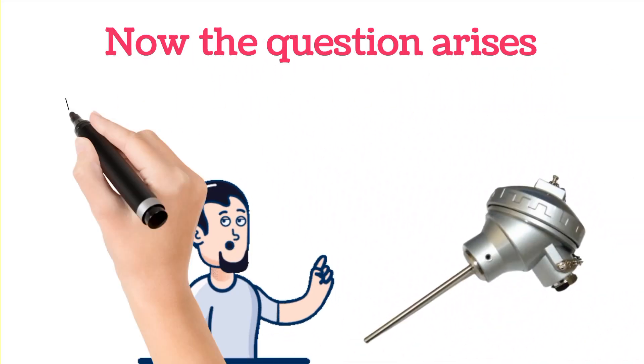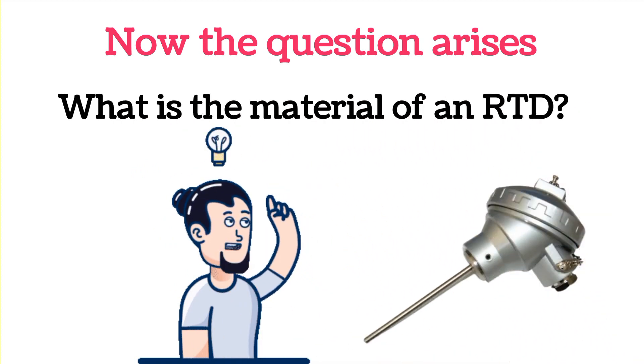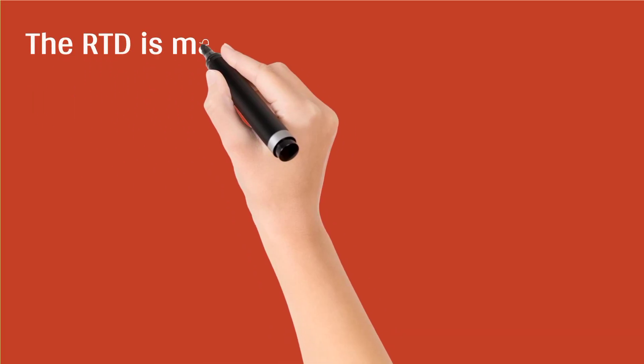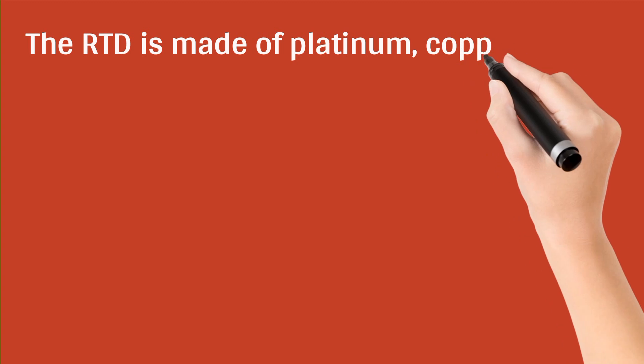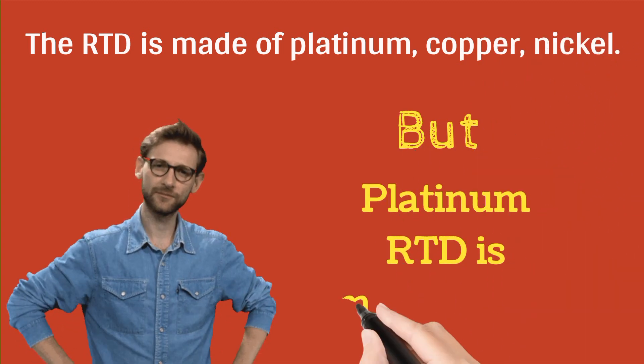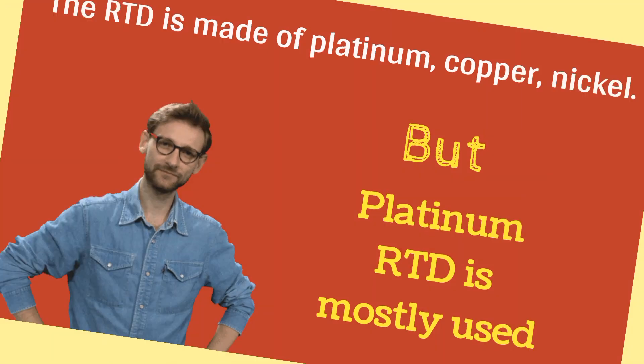Now the question arises what is the construction material of an RTD. If we are talking about the construction material of an RTD we are talking about the sensing element material. In this image the sensing element is shown by the circle. Now we will see which material is used in the construction of RTD. The RTD is made of platinum, copper, nickel, but platinum RTD is mostly used.